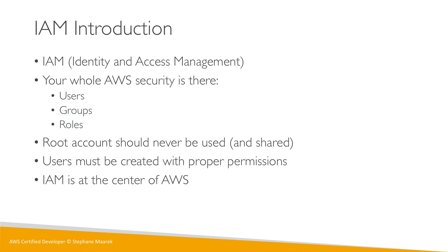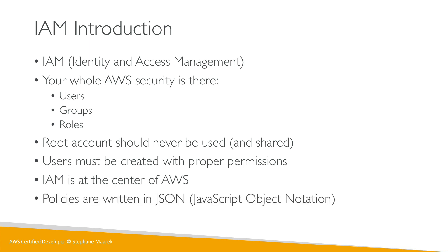Within IAM we'll have policies, and these policies will be written in JSON. JSON stands for JavaScript Object Notation and is basically a way to write data. If you don't know anything about JSON, I strongly recommend going online for a quick tutorial, because I assume that as a developer you probably know what that is.